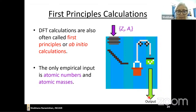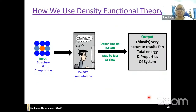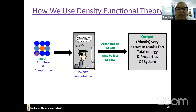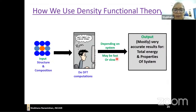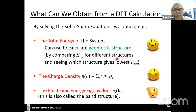You input a structure and a composition — you can also calculate the structure if you don't know it, though that's a hard problem — then you do DFT computations. Depending on the system, DFT calculations may be very fast (bulk silicon on a laptop takes perhaps two seconds) or for the kinds of systems I'll show later, it might take a week or two on a large cluster. The output is mostly very accurate results for the total energy and properties of the system.